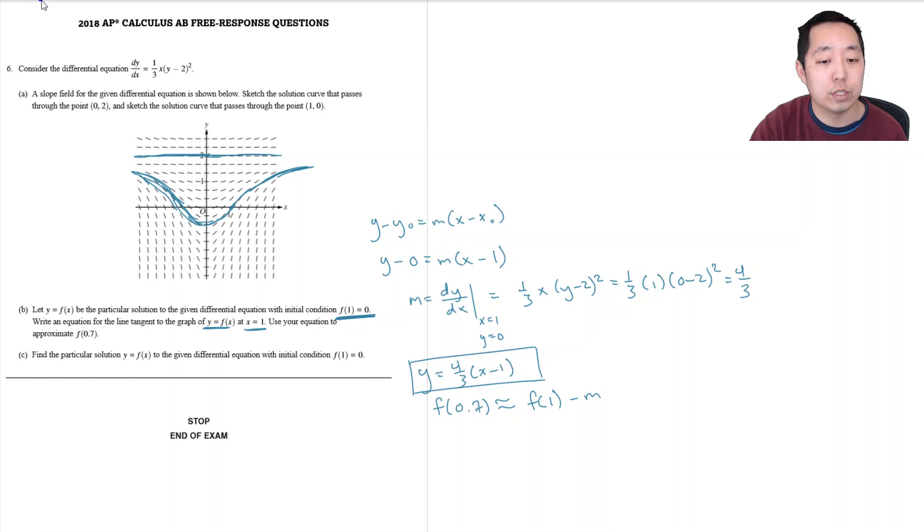So what I would say is f of 0.7 is just plugging in 0.7 into here. So it's four thirds times 0.7 minus one.